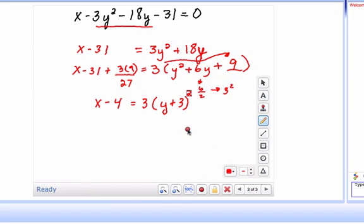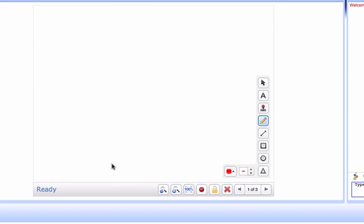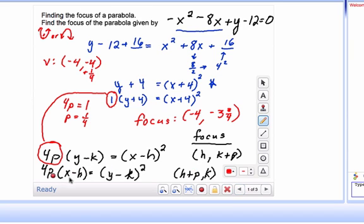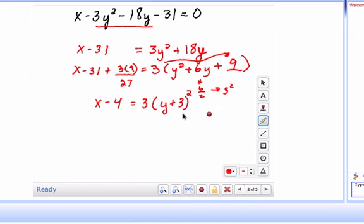Now if you remember from your formula, in these formulas there's no numbers in front of the squares, so we need to get rid of those and they're going to end up giving us this 4p value. So we're going to divide both sides by 3, so essentially this is going to give us 1 third times the quantity of x minus 4 equals the quantity of y plus 3 squared.